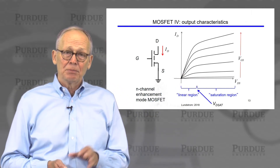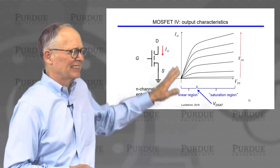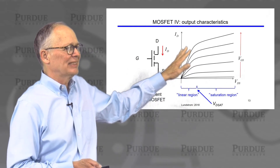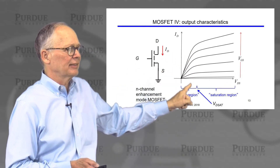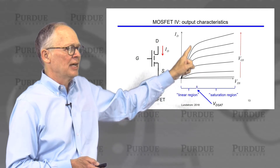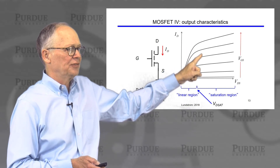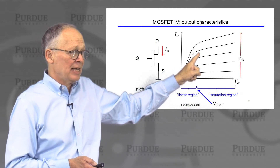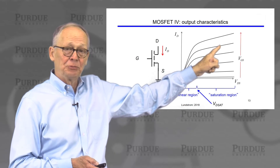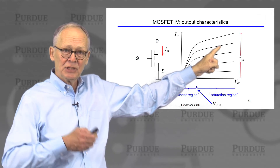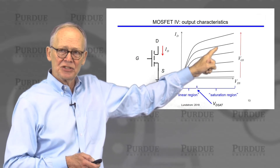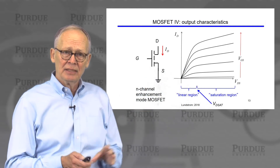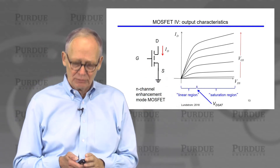There is a critical voltage called VDSat — the drain saturation voltage. If the voltage on the drain is bigger than VDSat, we're in the saturation region. If the voltage is less than VDSat, we're in the linear region. There's also another region that is hard to see here, called the sub-threshold region: if the gate voltage is not big enough to turn the device on, then essentially no current flows.